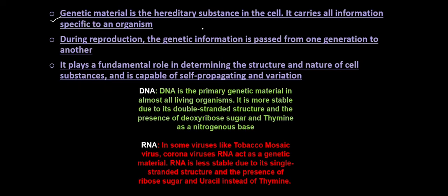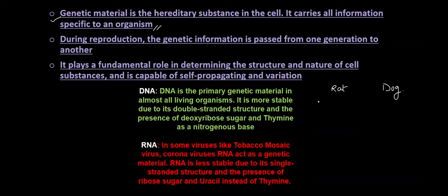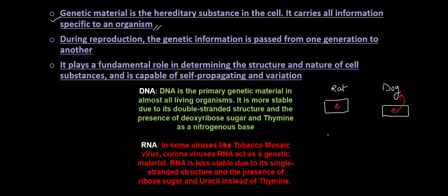Genetic material is a hereditary substance in the cell — it carries all information specific to an organism. For example, a rat cell and a dog cell both have genetic material, but the genetic material is very specific: the rat's genetic material gives the rat its identity and characteristic features. This genetic material has to pass down from generation to generation — from the first generation to the third generation and so on — for the species to continue.